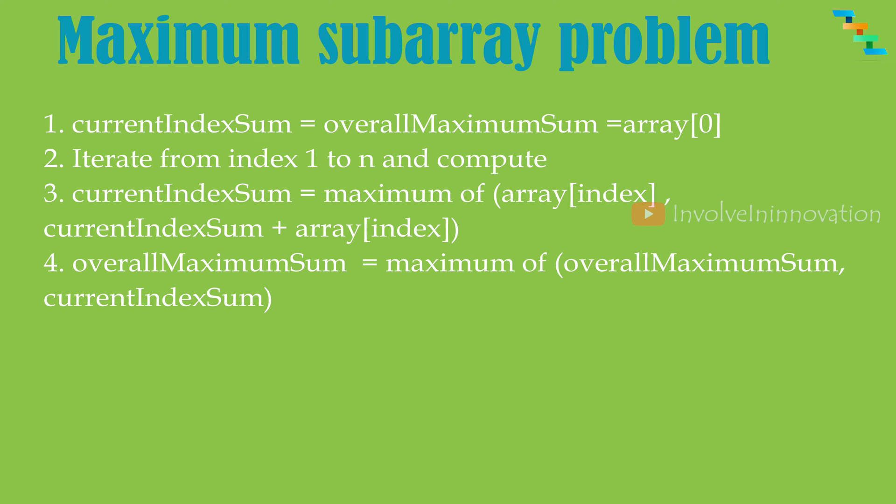Let's see a pseudocode of Kadane's algorithm. Assign the 0th index value of the array to both the current index maximum sum and the overall maximum sum. Starting from index position 1, iterate till n and find the max value between the current index value and the sum of the current index value and the last index maximum sum. If the current index maximum value is greater than the overall maximum value, replace the overall maximum sum with the current index maximum value.